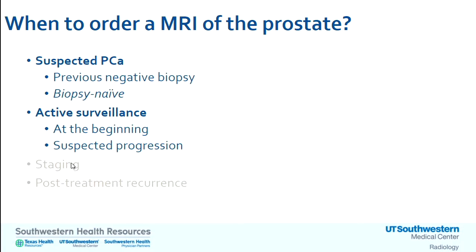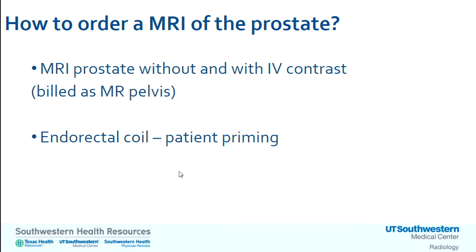Two indications more in the realm of the specialist are staging and post-treatment recurrence after prostatectomy or radiation therapy. How do you order an MRI of the prostate? It's pretty simple — just order an MRI of the prostate without and with intravenous contrast. It's billed as an MRI of the pelvis. You don't need to write multiparametric or endorectal coil — ordering an MRI of the prostate at our institution will automatically get your patient a multiparametric MRI with the endorectal coil.